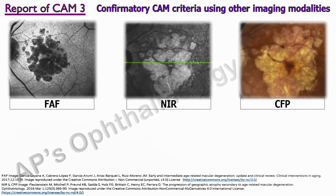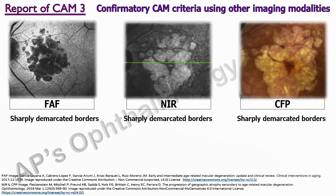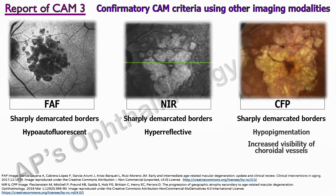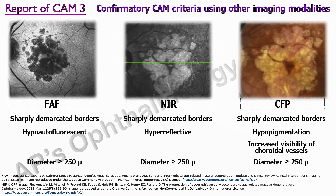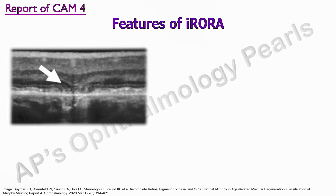The confirmation criteria are as follows: sharply demarcated borders are common to all three modalities. In FAF, the lesion should be hypofluorescent. In near-infrared reflectance, the lesion is hyperreflective. In color fundus photography, the lesion should be hypopigmented with increased visibility of the choroidal vessels. The important requirement is that these features should be present over a diameter of greater than or equal to 250 microns.